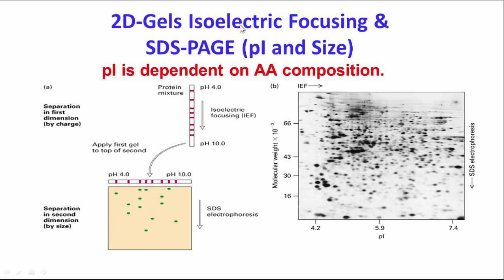You can also do 2D gel electrophoresis, which is used a lot in proteomics. First, isoelectric focusing is done in one direction using a gel with a pH gradient from 4 to 10 — the protein migrates until it reaches its isoelectric point and stops because it has net zero charge there. Then this gel is turned, placed on top of an SDS-PAGE gel soaked in SDS, and electrophoresis is run, separating by size in the second direction. You can isolate spots, treat with trypsin, and run them through a mass spec to determine what proteins they are.